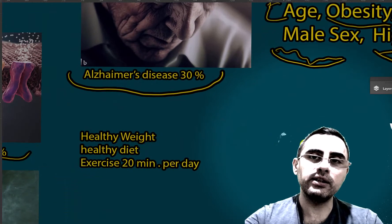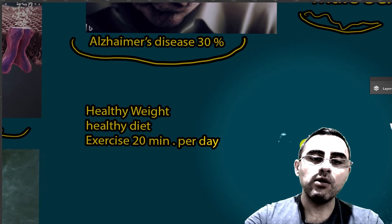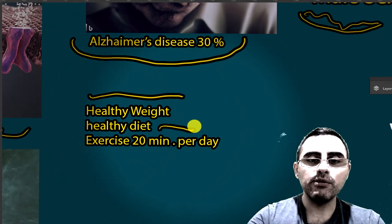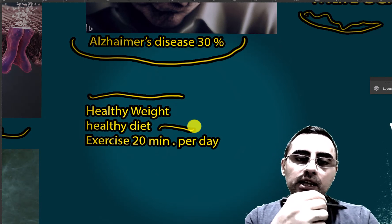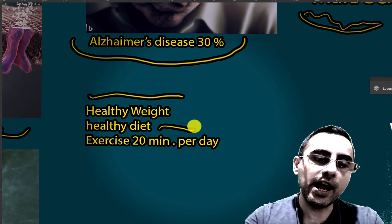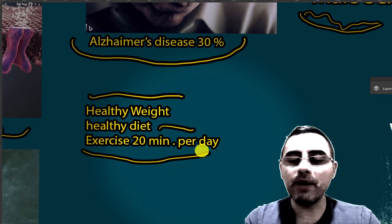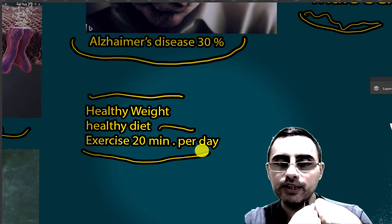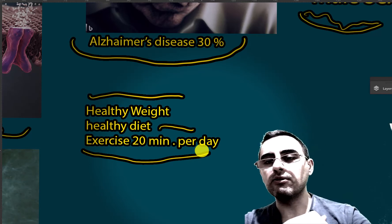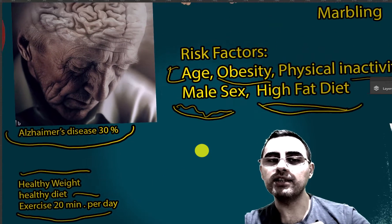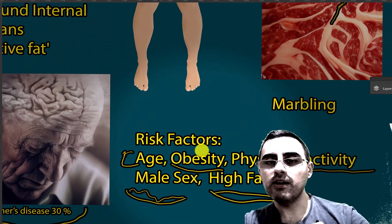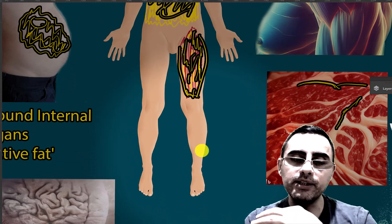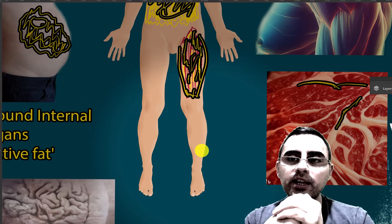To reduce or prevent intramuscular fat, the first step is achieving a healthy weight through weight loss. Second is a healthy diet with lots of vegetables, fruits, and fewer fatty meals. Third is exercise — 20 to 30 minutes per day. If we ask whether aerobic or anaerobic exercise is better for intramuscular fat loss, aerobic exercise is much better. Generally, for weight loss and long-term weight loss, aerobic exercises are recommended.